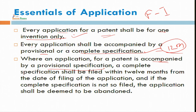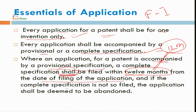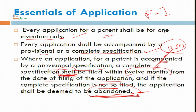When you are going to file an application with provisional specification, the complete specification shall be filed — and note the word 'shall' is used, not 'may' — within 12 months from the date of filing of the application. If the complete specification is not so filed, the application shall be deemed to be abandoned. Please note these two important words: 'shall' — not 'may' — and 'abandoned', meaning your application will get rejection from the patent office.